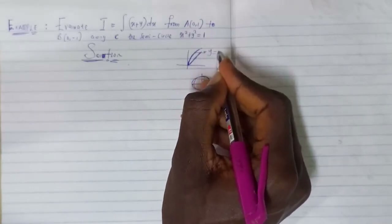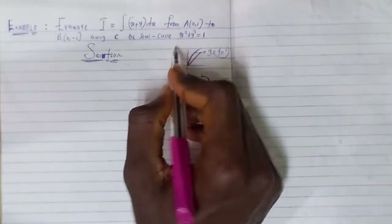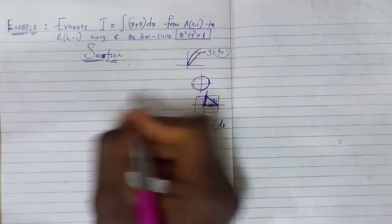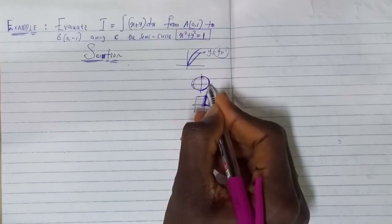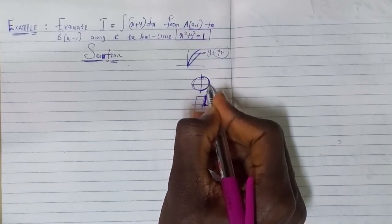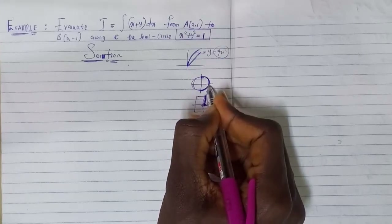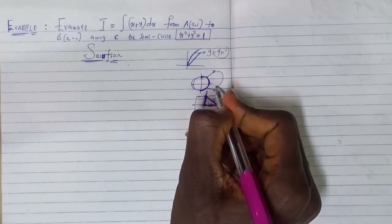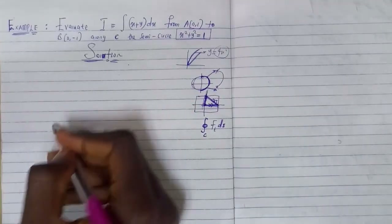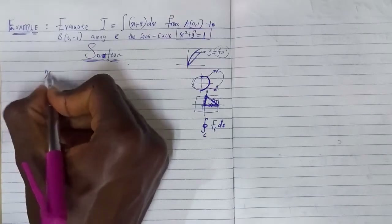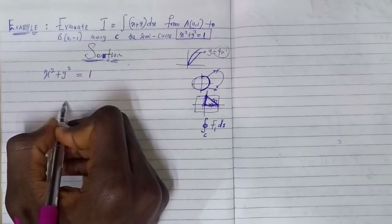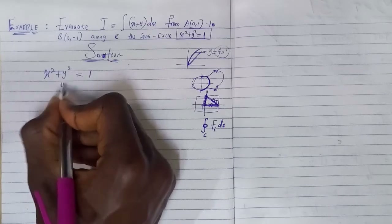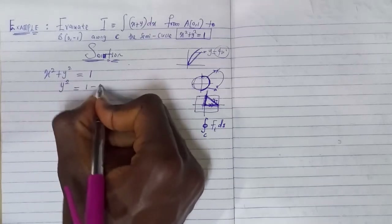Unlike the previous example given as y equals 4x², here we are given the equation of a semi-circle: x² + y² = 1. When you have a semi-circle in this format, you have a path from one point to another. You can decide to split the line integral — compute each part separately and add them together. That is a property of line integrals. The sum of the two results gives you the total line integral.